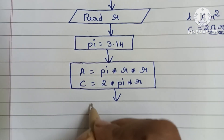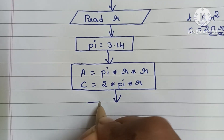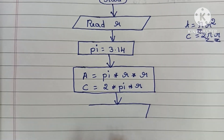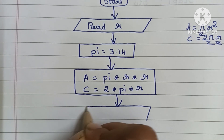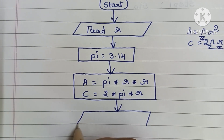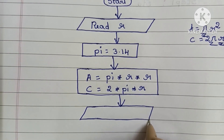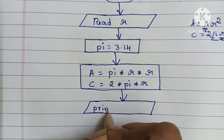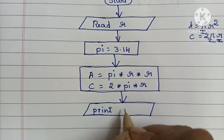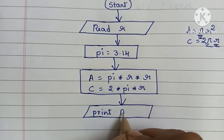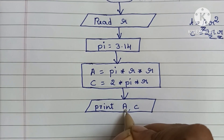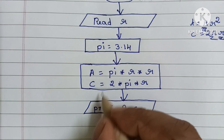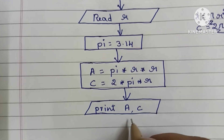Next, we display the output. The output is always written within a parallelogram shape. Here we write: print A, C — that is, the area of the circle and the circumference of the circle.